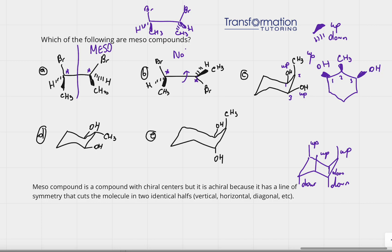Does molecule C have chiral centers? Carbon one has an OH, a hydrogen, and is connected on either side to different carbons — one side leads to a carbon bearing a methyl group and the other does not. So it is connected to four different substituents: OH, H, and two different carbon chains. It is a chiral center. The same applies to carbon three by symmetry.